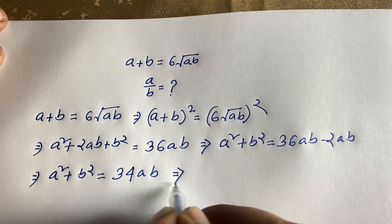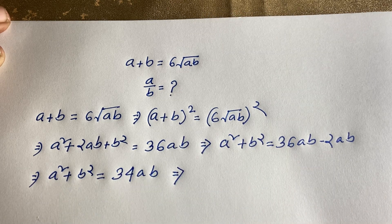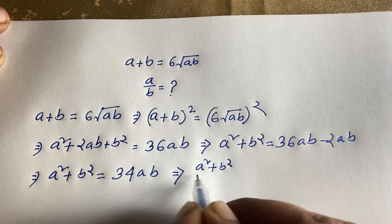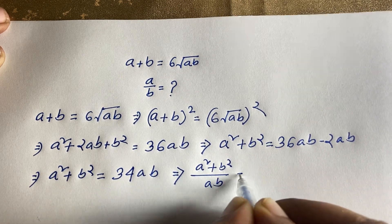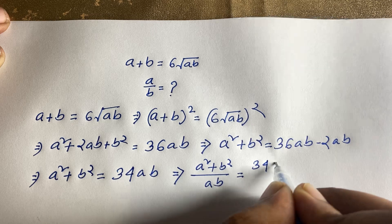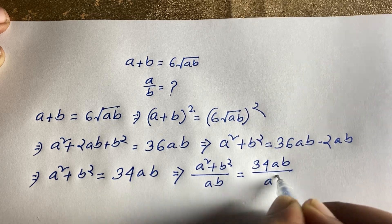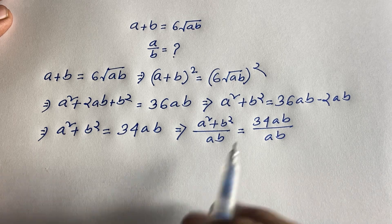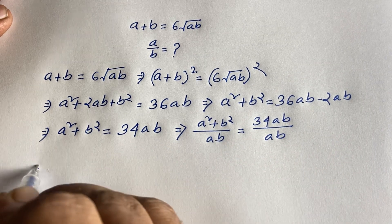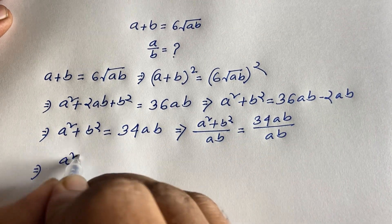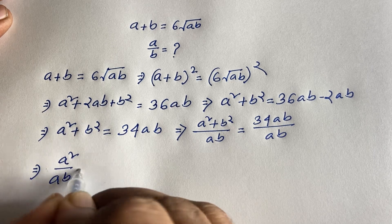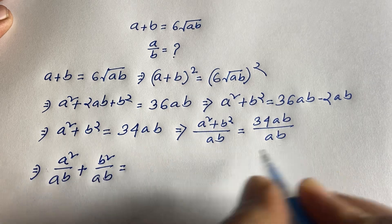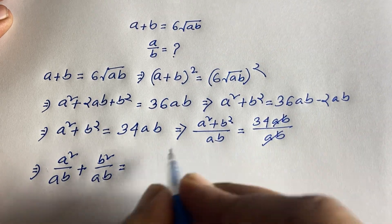Now I divide both sides by ab. So a² + b² over ab is equal to 34ab over ab. On the left side, this becomes a²/ab plus b²/ab, and on the right side ab cancels to give us 34.